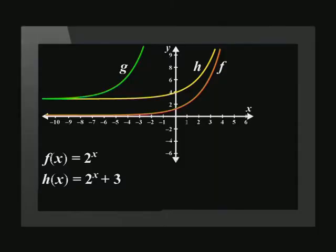Let's take the graph h of x and shift it 4 units to the left and call it g of x. The equation of g of x is 2 to the power of x plus 4 plus 3.